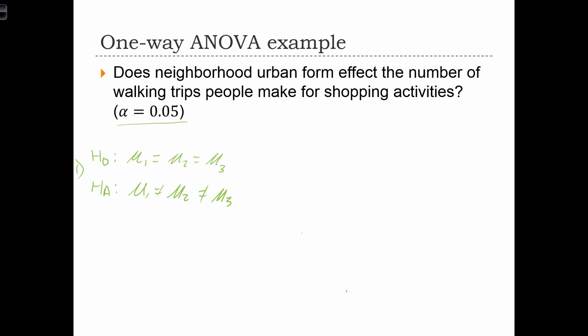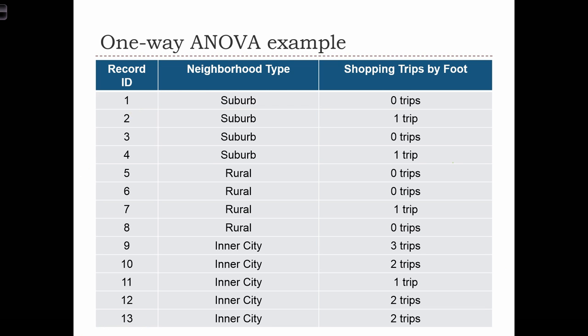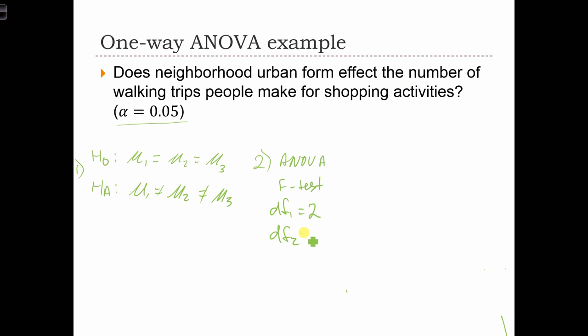This is step 1 of our classical hypothesis testing steps. Step 2 is, this is an ANOVA, so what test are we going to use? We're going to use an F test on 2 degrees of freedom, so degrees of freedom 1 is going to be k minus 1. We've got three groups, so the degrees of freedom 1 will be 2, and the degrees of freedom 2 is n minus k. In this case, we have 13 for n, k is 3, so we've got 10 degrees of freedom on the denominator. Our significance level is 5%.